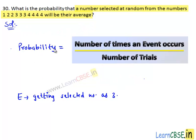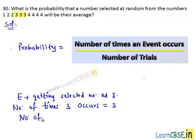We know that probability of any event is number of times any event occurs divided by total number of trials. Now, number of times 3 occurs equals to 3, since here 3 appears 3 times. Number of trials equals to total number of given numbers, which is equal to 10.